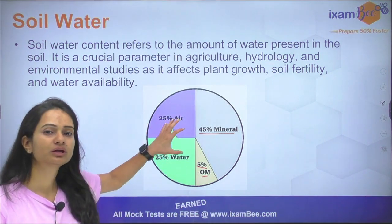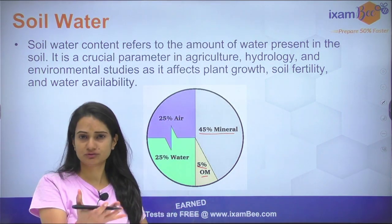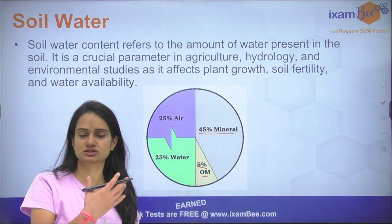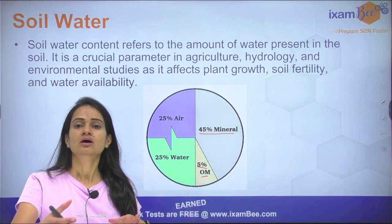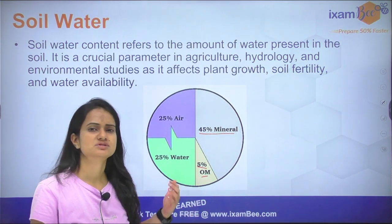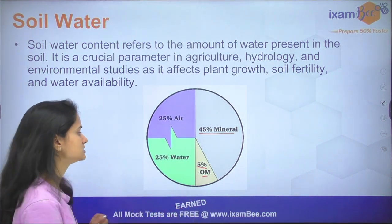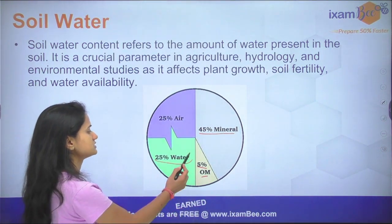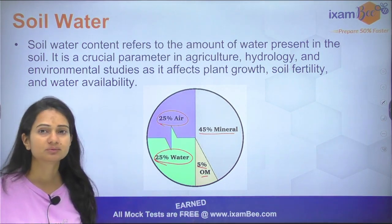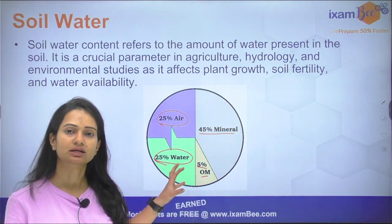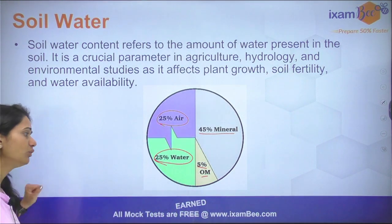According to different conditions — sometimes we have a lot of irrigation, sometimes we have a drought condition — the proportion remains above and below. Ideally, 25% water and 25% air should be present in the macropores.